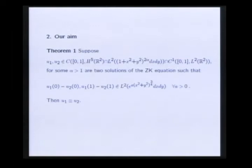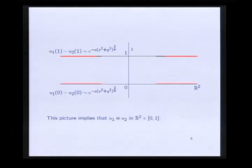Graphically, this means if the horizontal axis represents the space R2 and the vertical axis represents the time T, and in these two lines T equals 0 and T equals 1 the difference of the two solutions has this exponential decay, then the difference must be 0 in the whole band R2 cross [0,1].